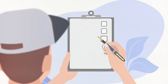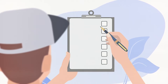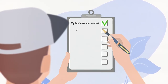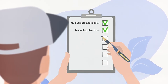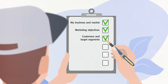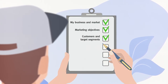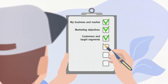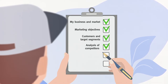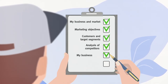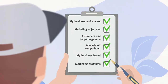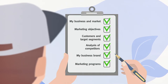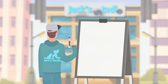At this point, you should have the following in place: 1. I know my business and the current market. 2. I've set clear, realistic and measurable marketing objectives. 3. I understand my customers and have defined meaningful target segments. 4. I've completed an analysis of my competitors. 5. I've developed a distinctive brand for my business. 6. I've identified the marketing programs I need to focus on.